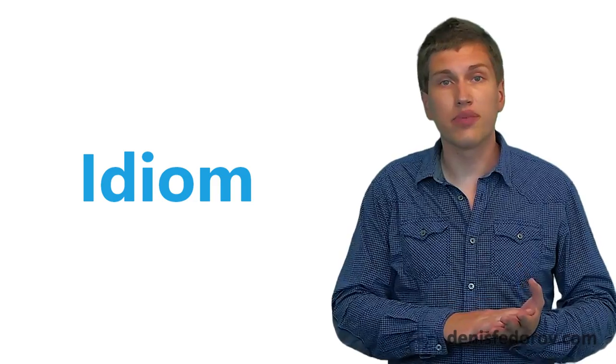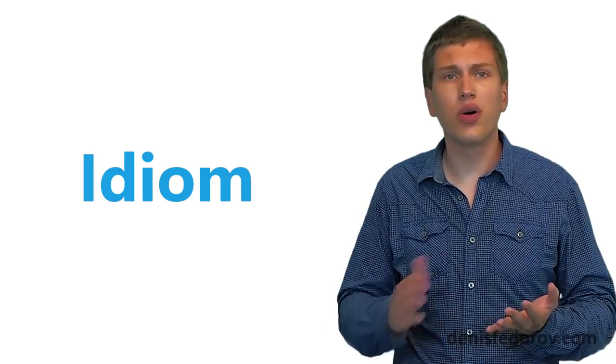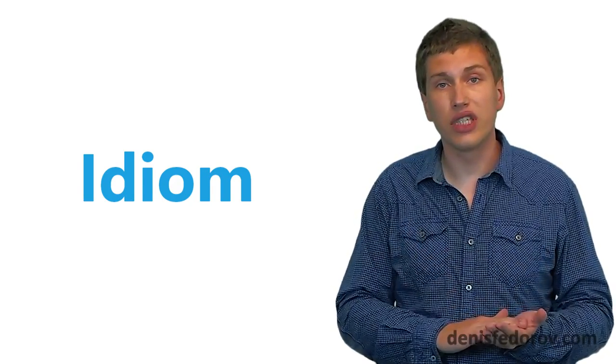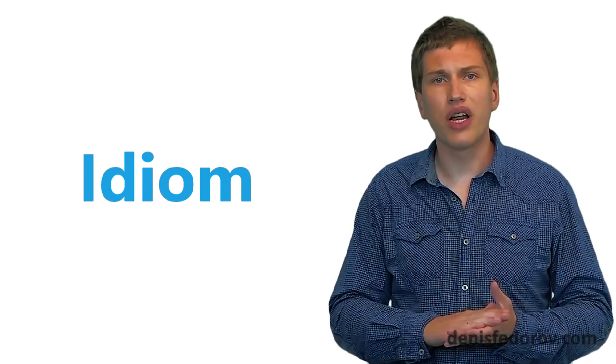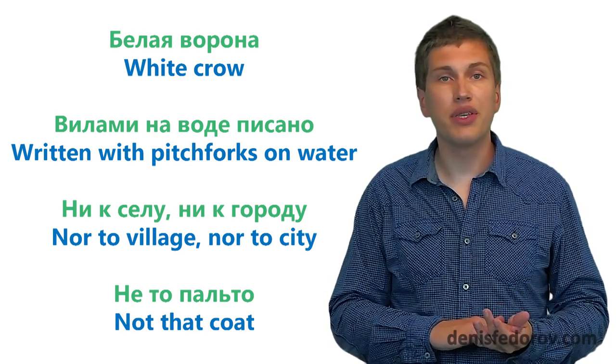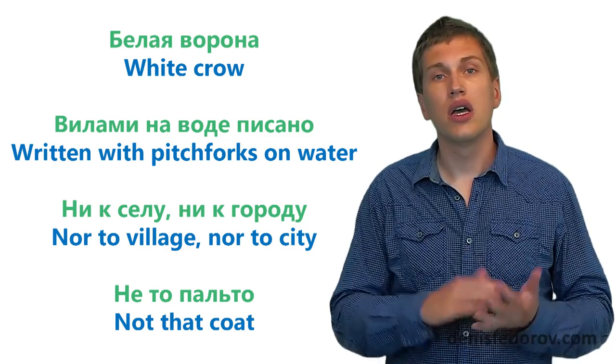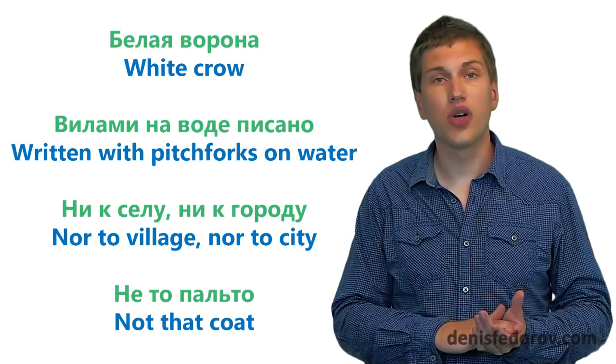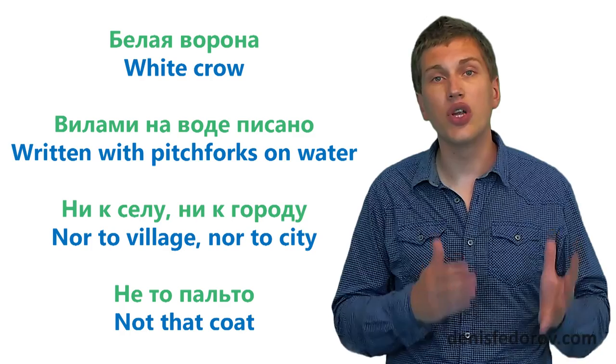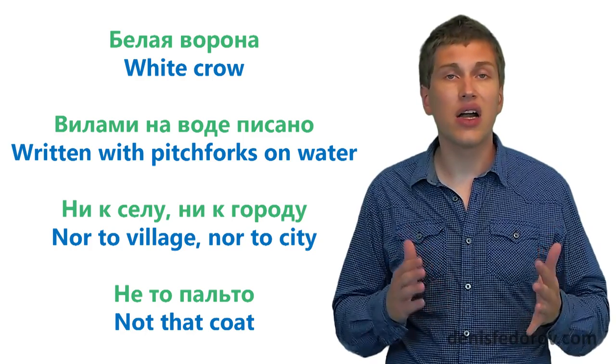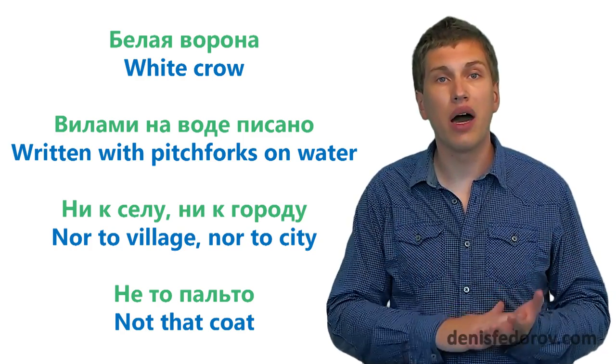Idiom is a phrase or fixed expression that can't be translated literally and have figurative meaning. Beat around the bush, caught between two stools, actions speak louder than words. If you literally translate those idioms, you can't get their meaning. Here are a couple of Russian examples for idioms. Белая ворона, white crow, вилами на воде писано, written with pitchforks on water. Ни к силу, ни к городу, nor to village, nor to city. Ни то пальто, not that code. These idioms translated into English literally have no clear meaning at all. They can't be literally translated. But idioms are understood by all native speakers and actively used by them.